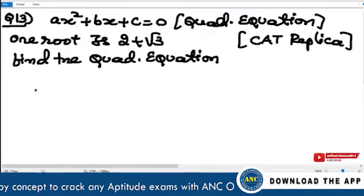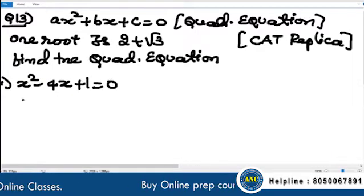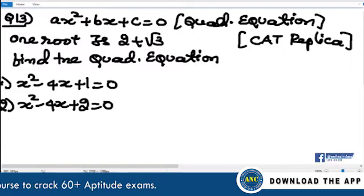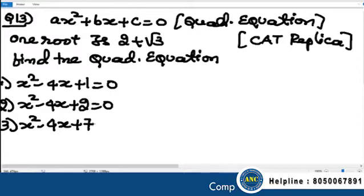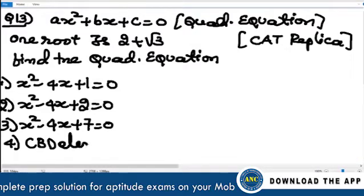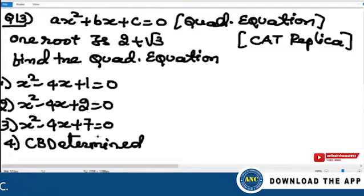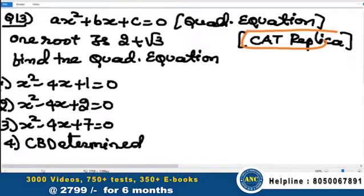We will start with a conceptual question. The options are: first, x² - 4x + 1 = 0; second, x² - 4x + 2 = 0; third, x² - 4x + 7 = 0; and fourth, cannot be determined. Many students will tick mark the answer to be x² - 4x + 1 = 0.